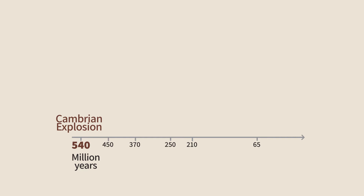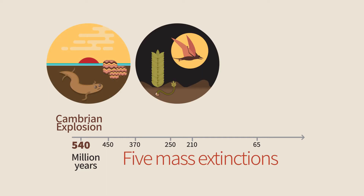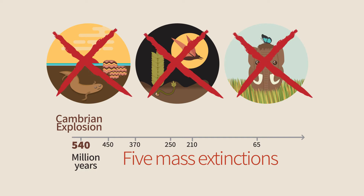Life on Earth has witnessed since then five mass extinctions. Species evolve and become extinct all the time, and most species that ever lived went extinct. However, these were dramatic events during which a large fraction of all species perished. During the worst extinction that took place 250 million years ago, the great majority of both terrestrial and marine animals went extinct.